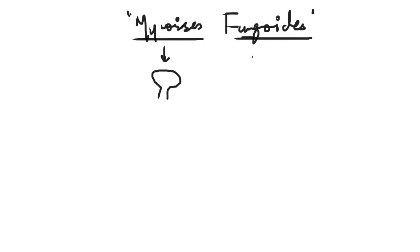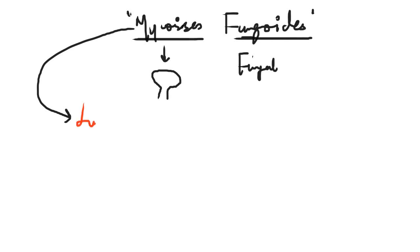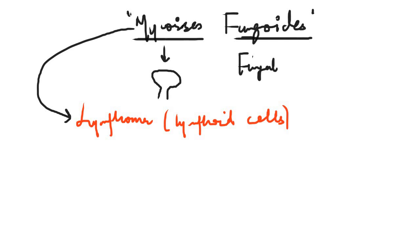It was thought to be a fungal infection, but later when histopathology was done and the lesion was analyzed further, it was found that it is not a fungal infection. Instead it is a lymphoma — an aggregate of lymphoid cells. So the term mycosis fungoides is basically a misnomer.